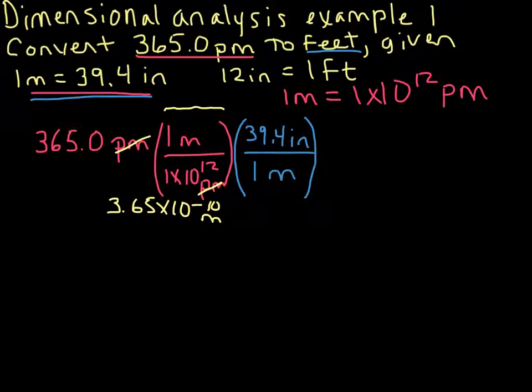So again, just going back, we were in meters. And now we have used a conversion factor where one meter is equal to 39.4 inches. That's the same quantity, the same length in two different units. So now we're in inches. If I were to go ahead and run this, 365.0 divided by 1 times 10 to the 12th, multiplied by 39.4, I would end up with 1.438 times 10 to the negative 8 inches.